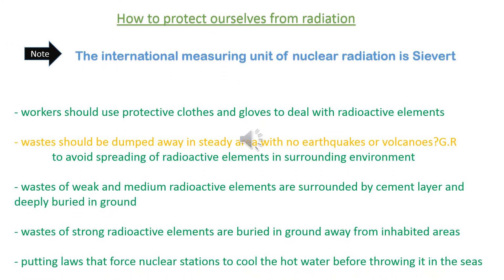The international measuring unit of nuclear radiation absorbed by the human body is the sievert. The safe dose when exposed to nuclear radiation for people who work in the nuclear radiation field is 20 mSv per year, while for the general public it is 1 mSv per year.